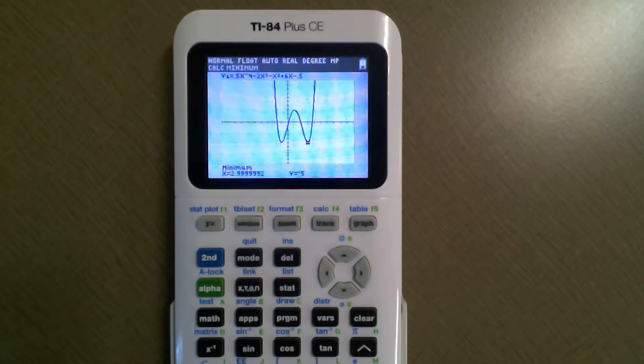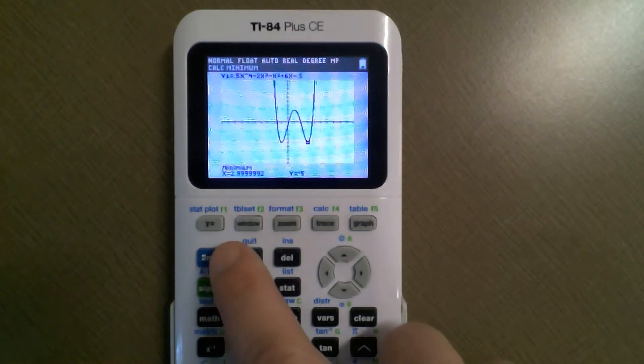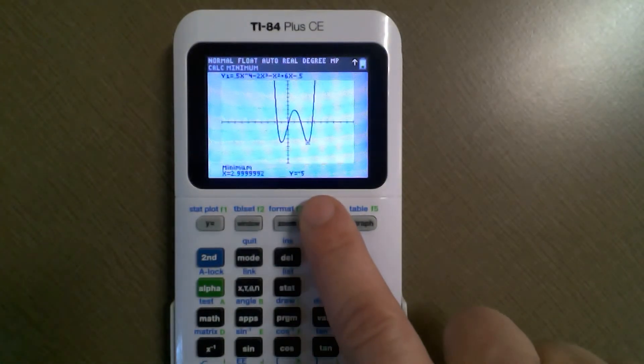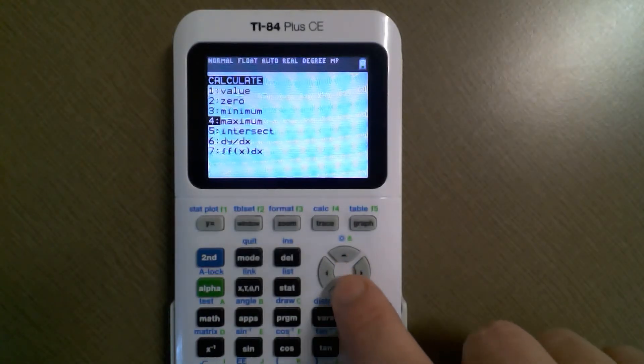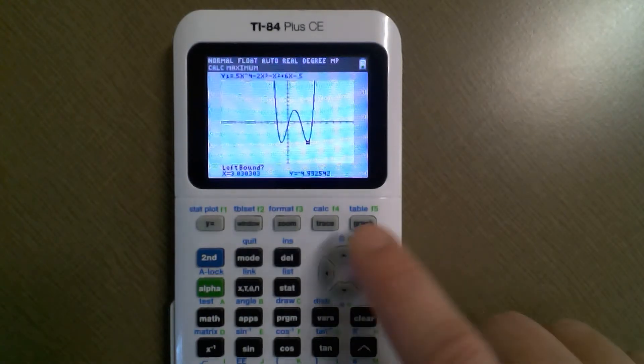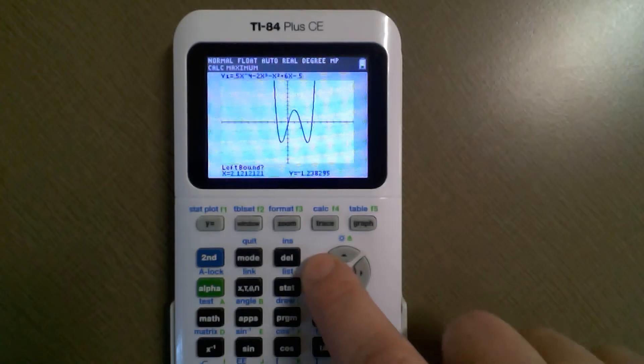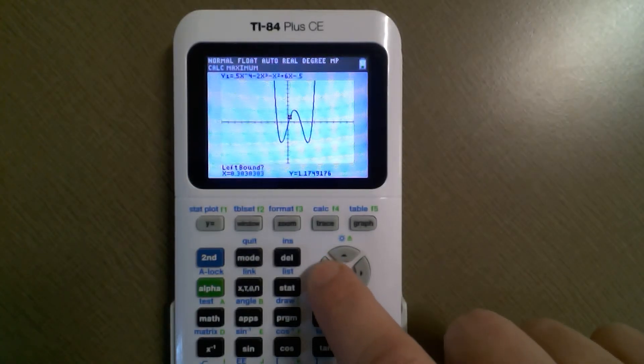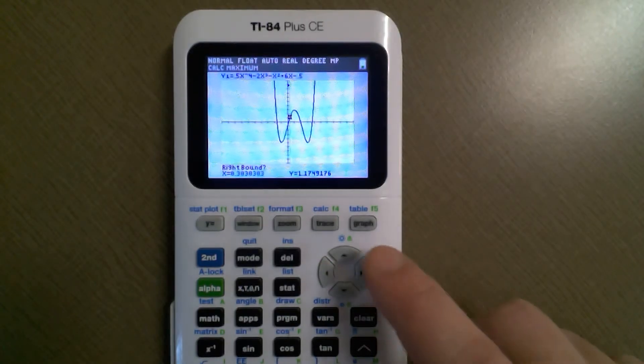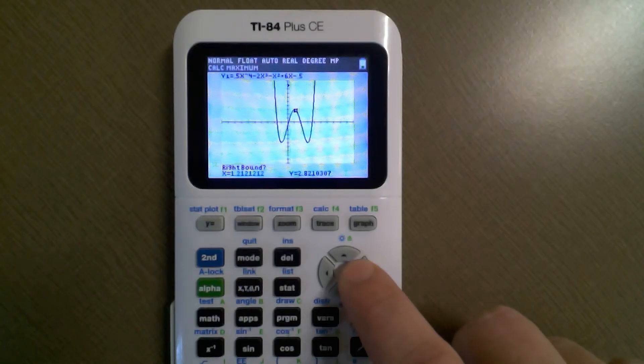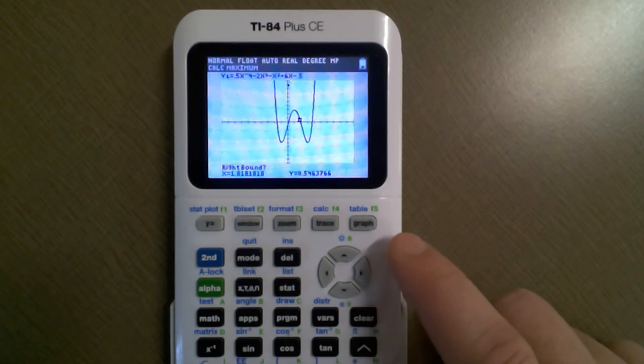For maximums, it's the same exact thing. Second calc, this time you go to maximum. When it says left bound you want to make sure you're on the left of that maximum, hit enter. Right bound, you want to make sure you're on the right of that maximum, hit enter.